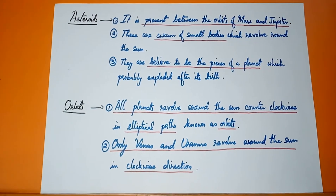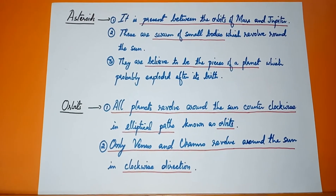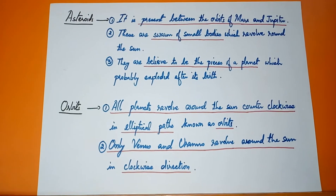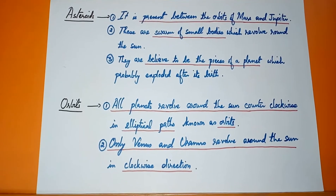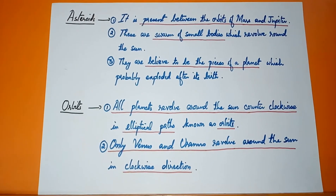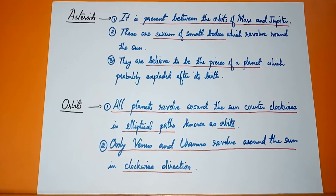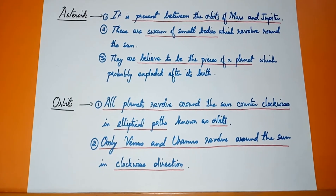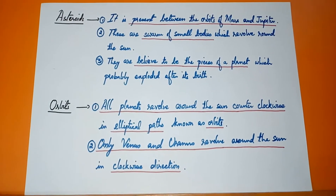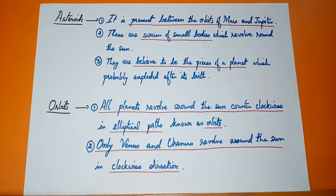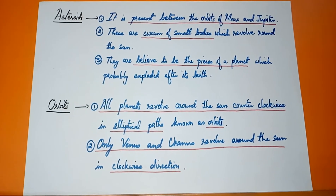The next term is asteroids. Asteroids are present between the orbits of Mars and Jupiter. These are a swarm of small bodies which revolve around the sun. They are believed to be the pieces of a planet which probably exploded after its birth.